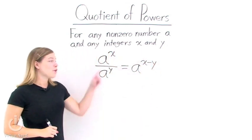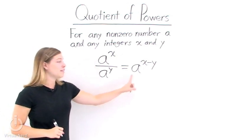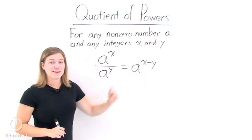In other words, if we're dividing two things with like bases, we can simply write one base and then subtract the exponents.